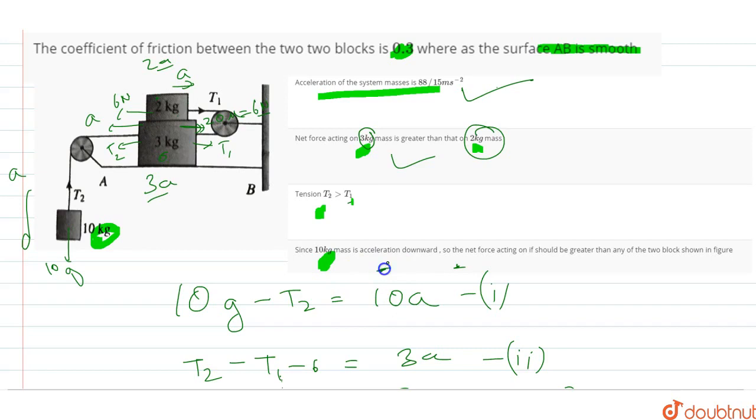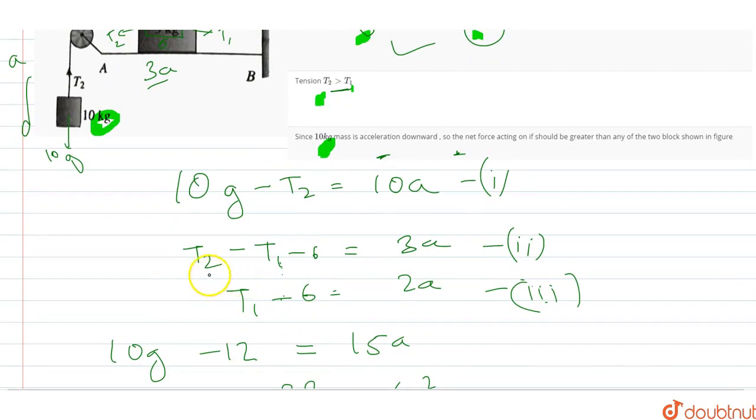Tension T2 is greater than T1. You can see from the equation T2 minus T1 minus 6 equals 3a. This is a positive number. This quantity should be bigger for the net number to be positive. T2 should be greater than T1 plus 6. T2 is greater than T1 plus 6, which is greater than 0 because 3a is greater than 0. Obviously T2 is greater than T1.